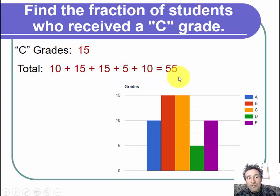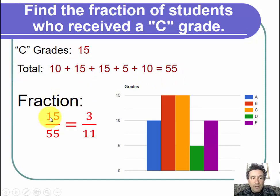So now we need to turn this into a fraction, which is quite easy because when you make a fraction, we just take the part over the total. So the fraction will be 15, because that's the number of C grades, divided by the total, 55. I reduced it because it's the right thing to do. 5 is a factor of 15, and 5 is also a factor of 55. 15 divided by 5 is 3, and 55 divided by 5 is 11, and we get 3 elevenths.